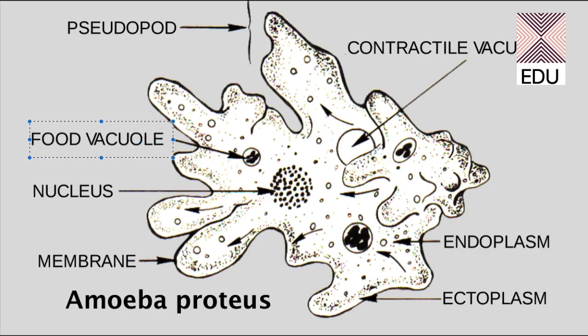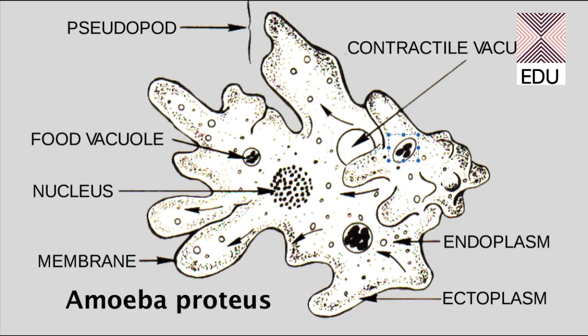Amoeba is always eating something, so there are multiple food vacuoles present. These food vacuoles are also called gastrosomes, and the food inside them can be solid or liquid. If it is solid, it can be an animal like paramecium — amoeba can eat paramecia. If it is liquid, it can be some fat droplet or oil droplet.